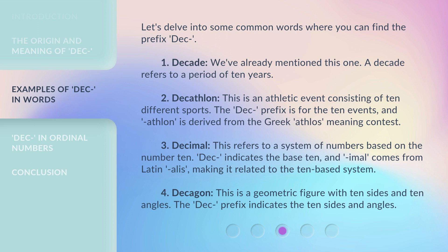Third: DECIMAL. This refers to a system of numbers based on the number 10. DEC indicates the base 10, and -IMAL comes from the Latin -ALIS, making it related to the 10-based system.